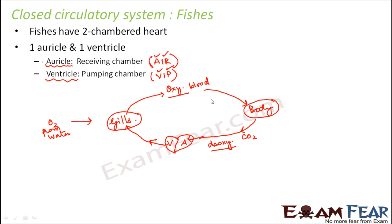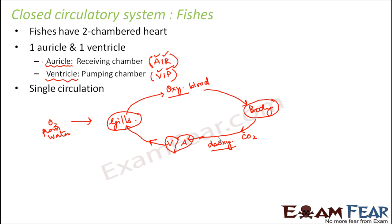Secondly, fishes are cold-blooded animals — they cannot regulate their body temperature independently of the environment. This is about the circulatory system of fishes. They have single circulation, meaning there is one single pathway for circulation of body fluid and hence the transport of gases.